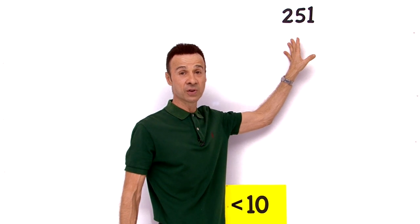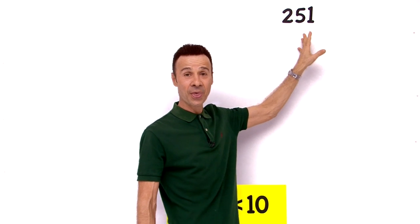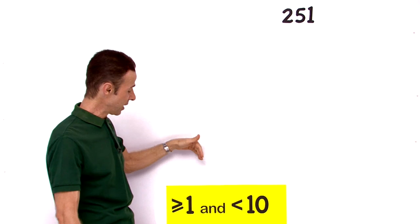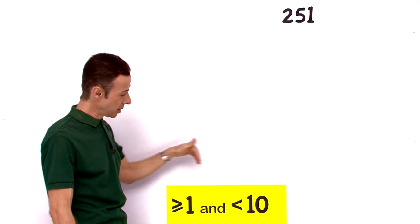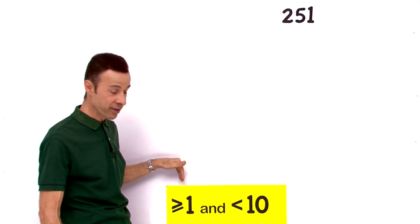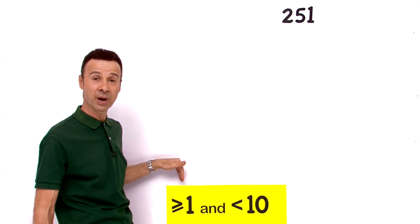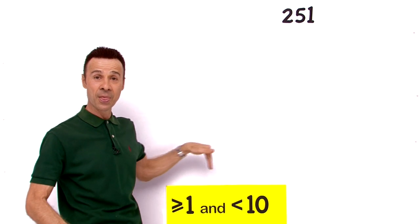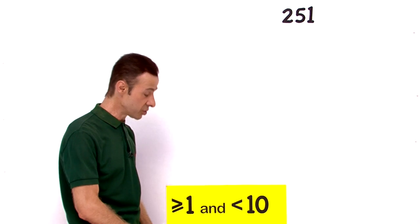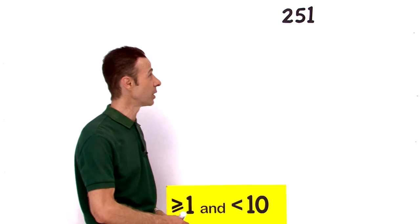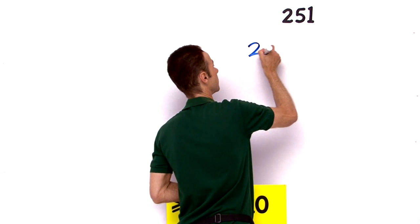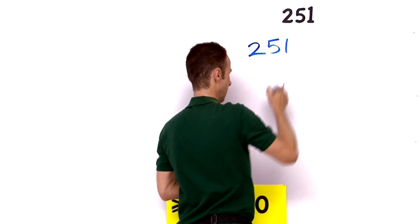Now, what is the first step? The first step is we want to write a digit. Move the decimal place in such a way that it turns into a number that is less than 10 and greater than or equal to positive 1. So it's got to be a digit that's in there.